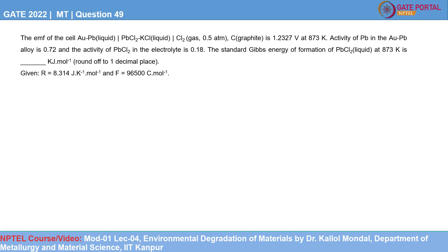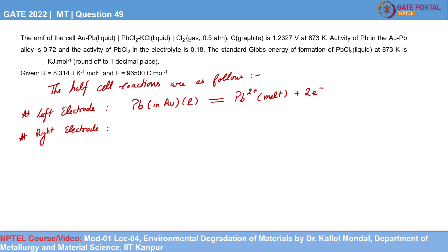In this problem, a gold-lead cell is given. At the left electrode, the lead-gold alloy in liquid form oxidizes to Pb²⁺ ion by release of 2 electrons. At the right electrode, chlorine gas at 0.5 atmospheric partial pressure reduces to chloride ion. The summation of these two half-cell reactions yields the overall cell reaction.